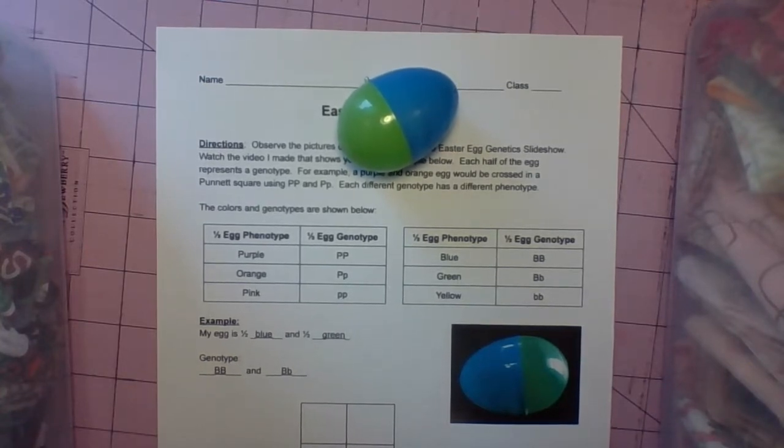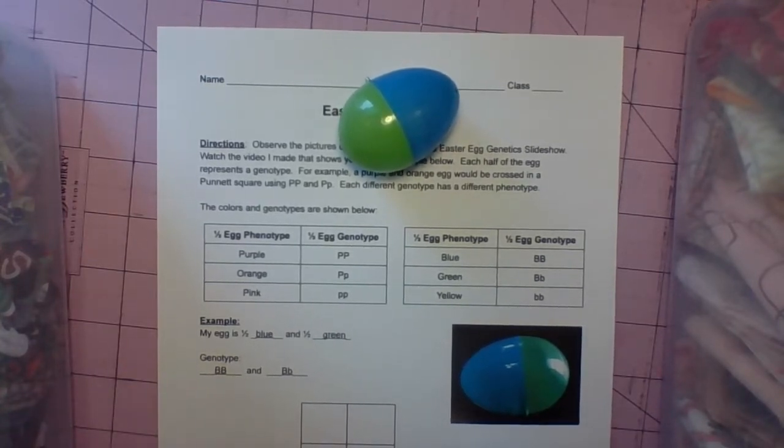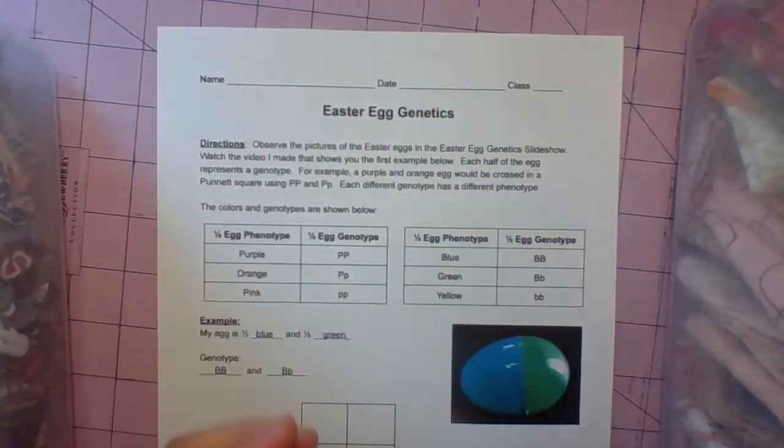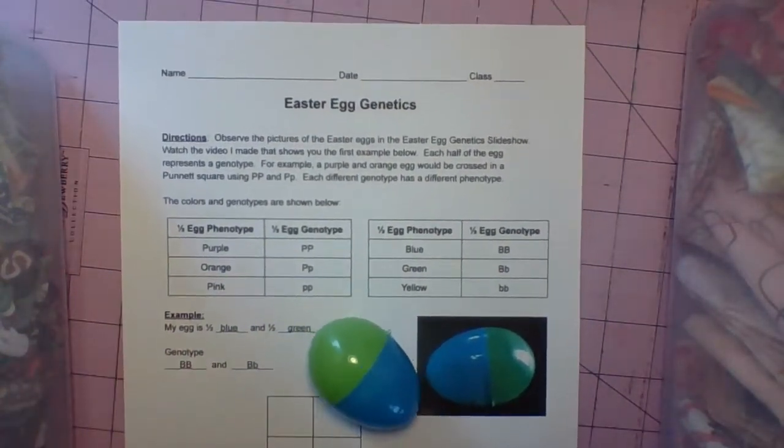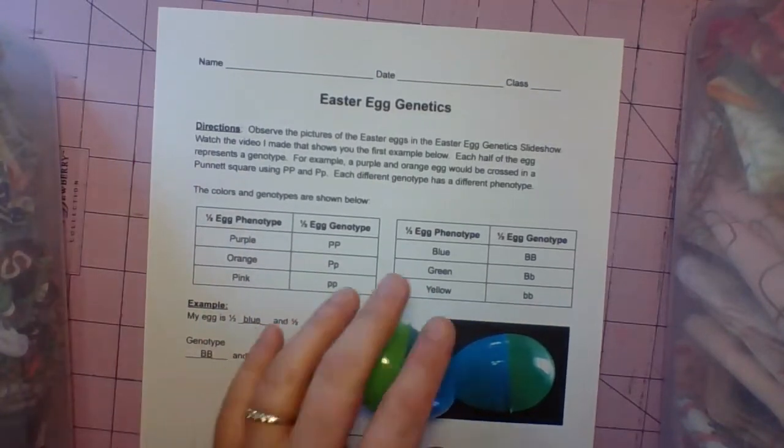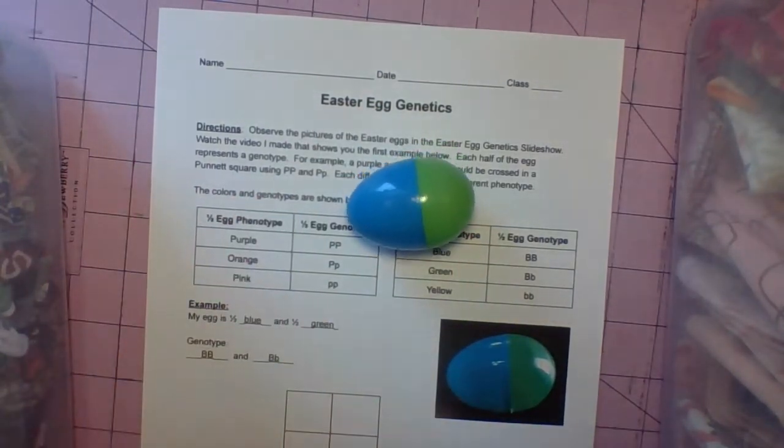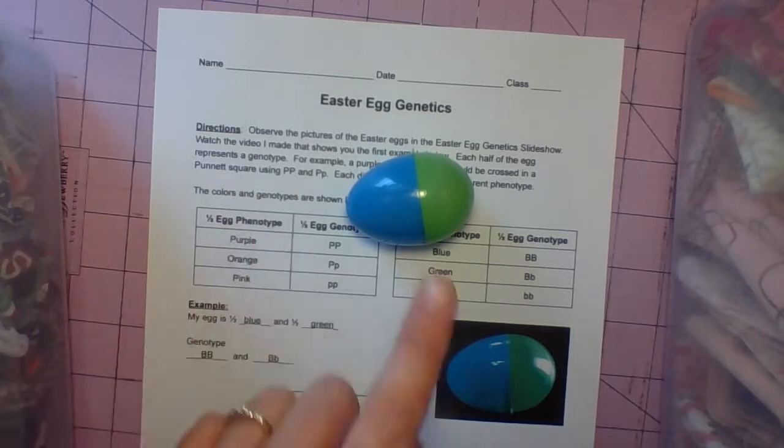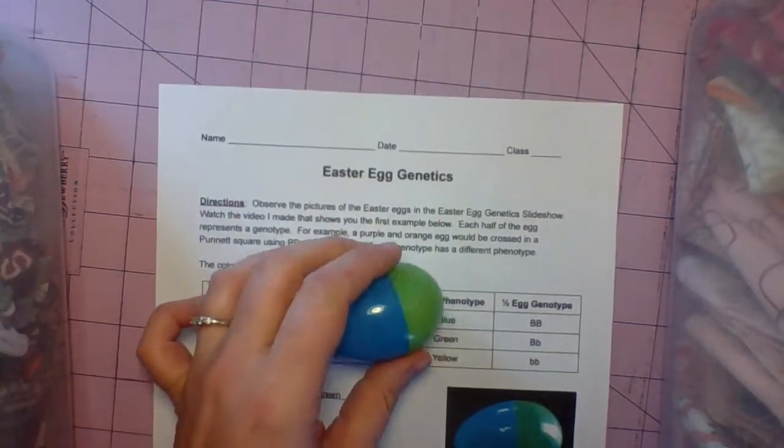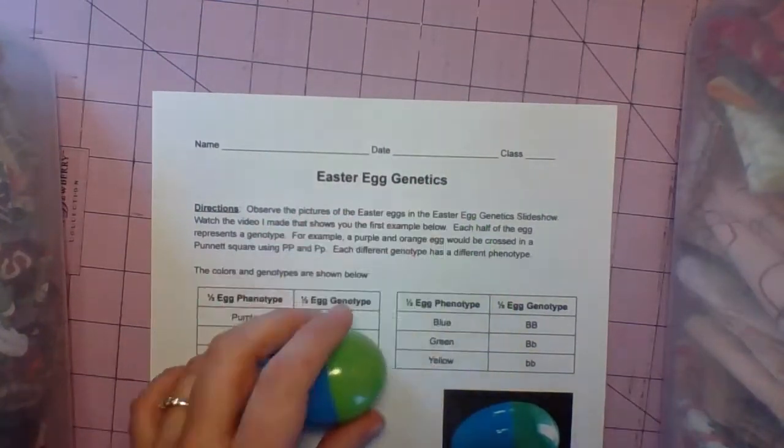There's a slideshow in the Google Classroom with pictures of different Easter eggs. There's a picture of this one and then on the next slide the solution. So I want you to work through each of these on your own, but you can always check your answers because I have a picture of the solution on the slide following the picture for each Easter egg.